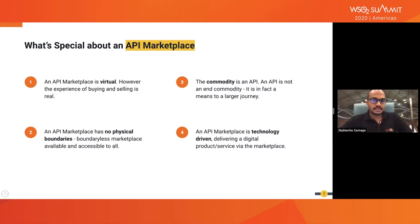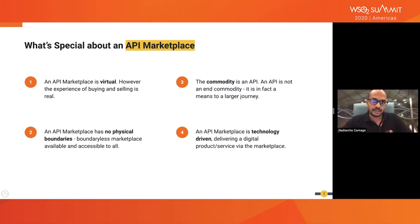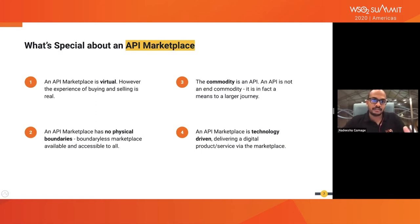And finally, an API marketplace is technology driven — it's a digital product available through a digital delivery medium. This takes away the competitive advantage that a traditional marketplace has based on physical location. In a digital marketplace, anyone has access and there's no prominent location. You need the right advertising method and scale to have the required competitive advantage compared to competitors who sell a similar marketplace product.